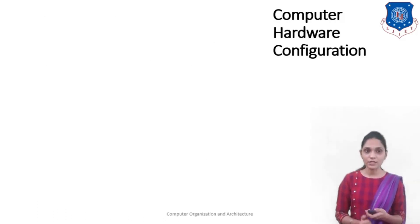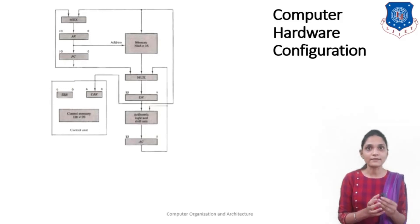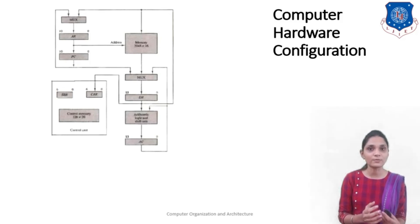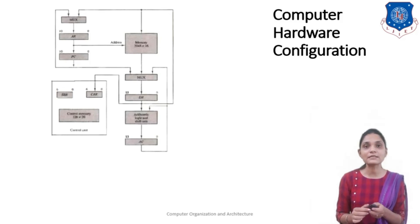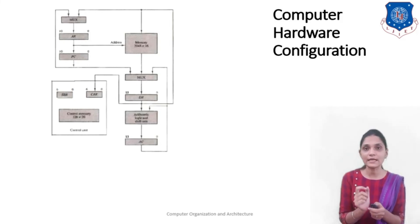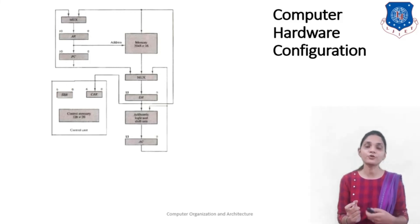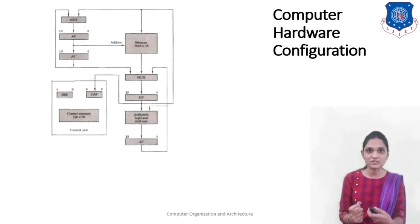Next, we will see the hardware configuration for the computer. The diagram shows the total configuration including the address register, program counter, memory, multiplexer, data register, ALU, and accumulator. The extra component added here is the control memory, which has a total address space of 128 × 20. It also has an SBR register and a CAR control address register, where the CAR provides the instruction address and the SBR stores the next address for micro operations.